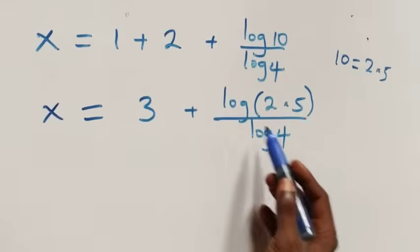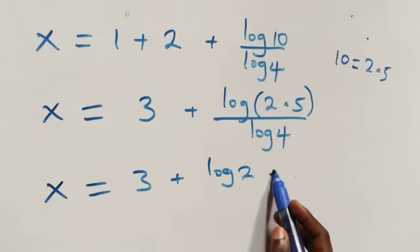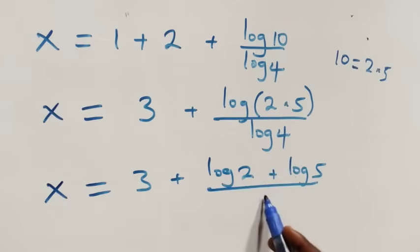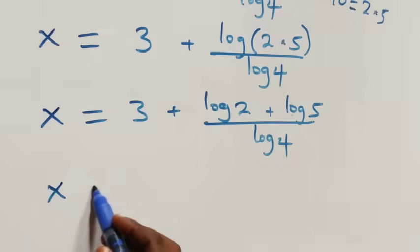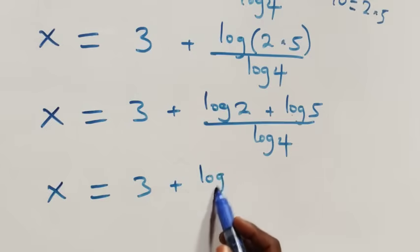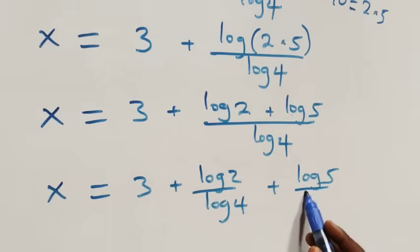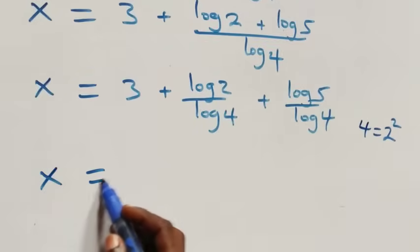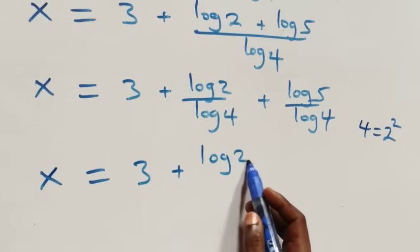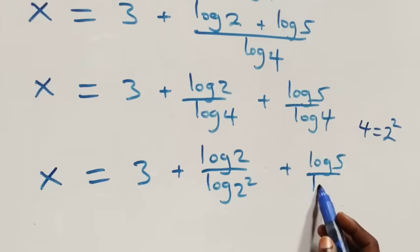This follows the law of logarithms: x equals 3 plus log 2 plus log 5 over log 4. Then next step, we separate this into two fractions: x equals 3 plus log 2 over log 4 plus log 5 over log 4. Now, log 4 is log 2 squared, so log 2 over log 2 squared gives 1/2.